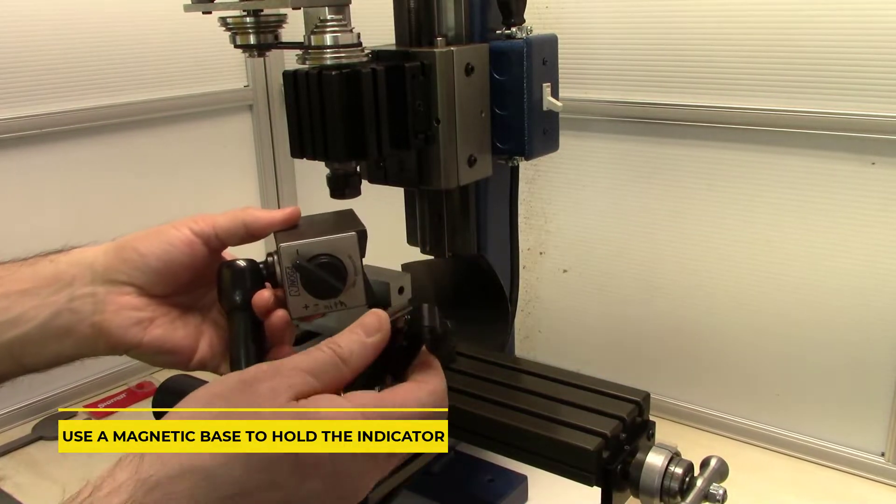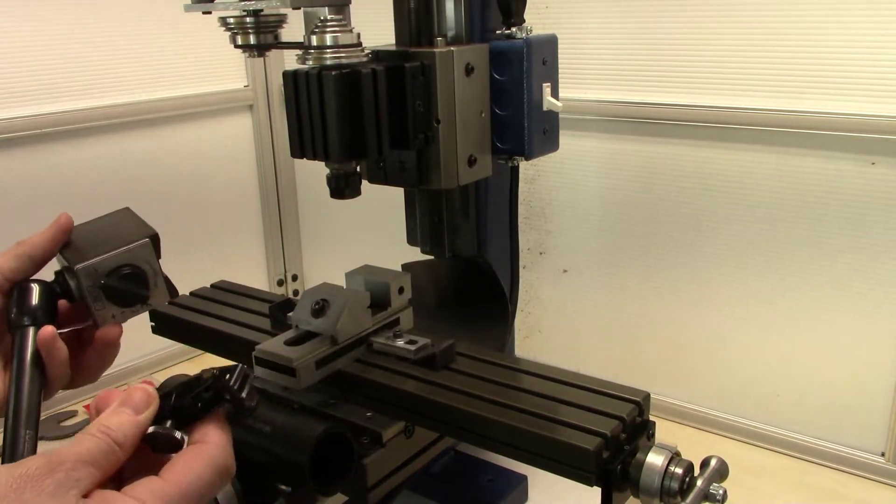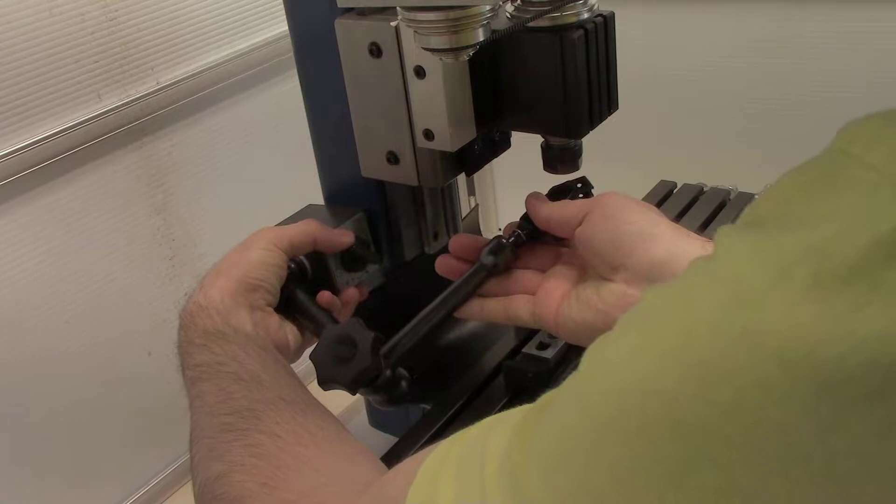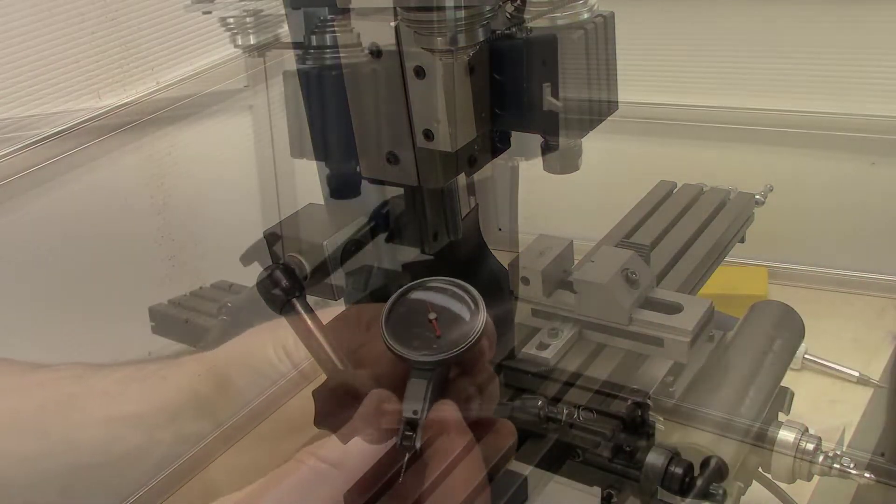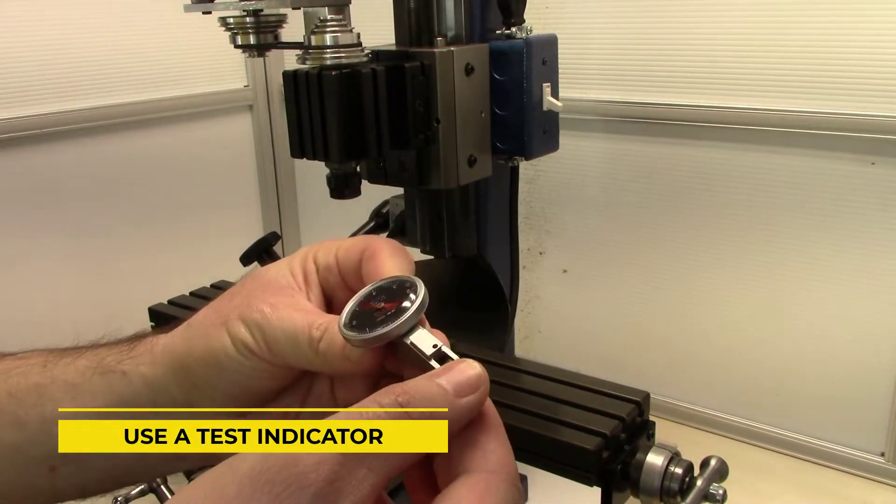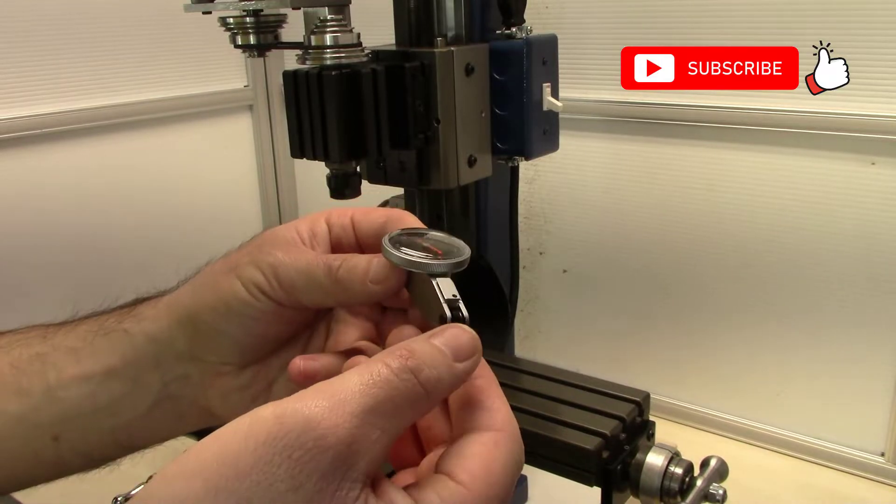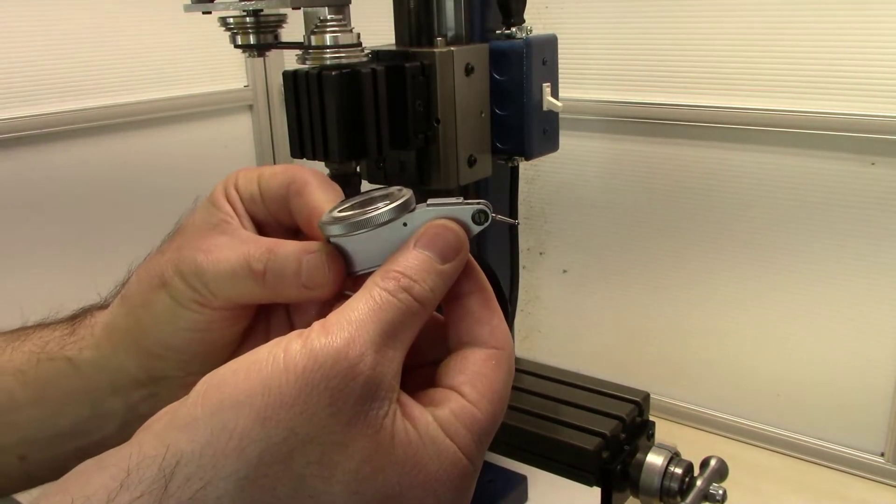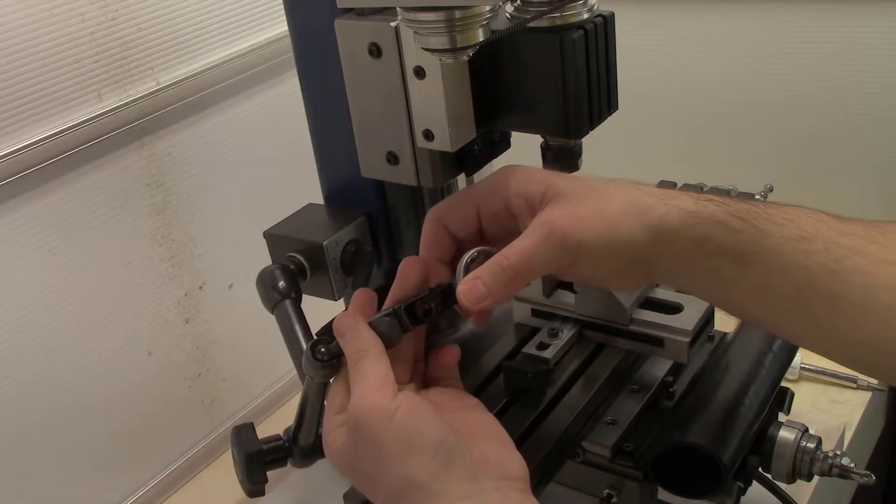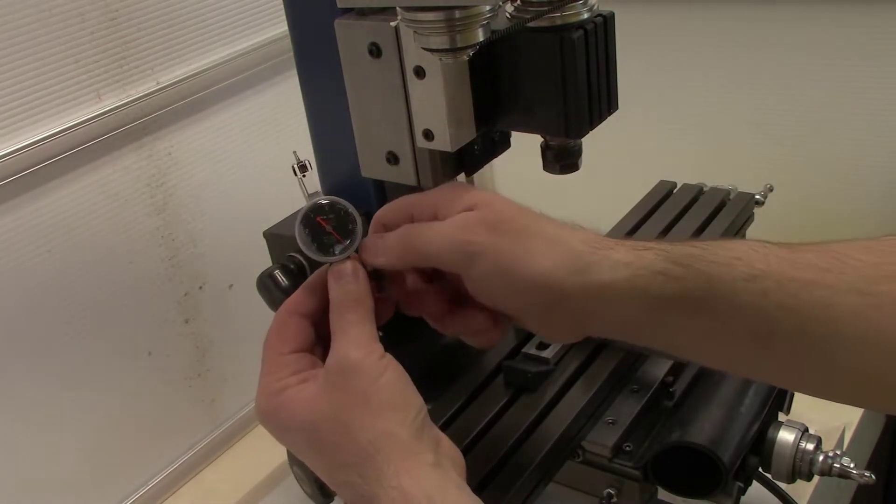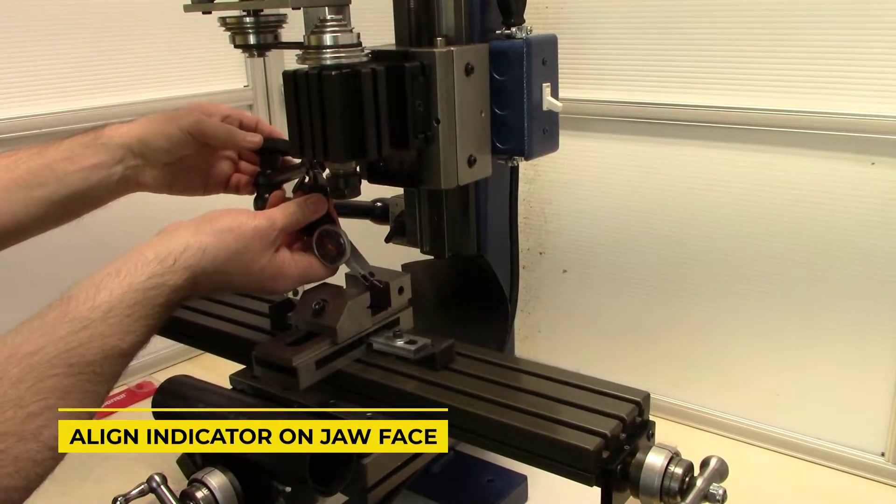We'll use a magnetic base to hold the test indicator. Here we'll use a test indicator that measures in tenths. We'll use the dovetail on the indicator to attach it to the magnetic base. We'll position our indicator on the solid jaw.